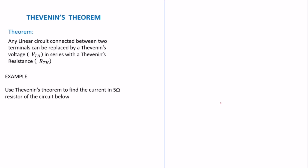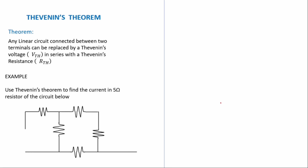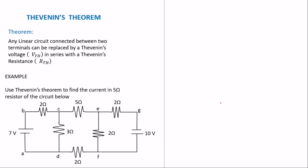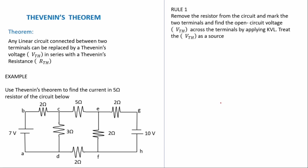We have an example: use Thevenin's theorem to find the current in the 5-ohm resistor of the circuit shown. This is an assignment in applied electricity, so I take my time to break it down. The first step in applying Thevenin's theorem is to remove the resistor from the circuit, mark the two terminals, and find the open-circuit voltage Vth — the Thevenin voltage across the terminals — by applying KVL.